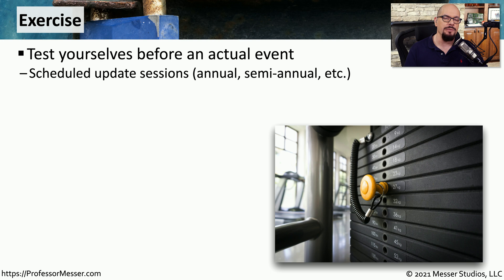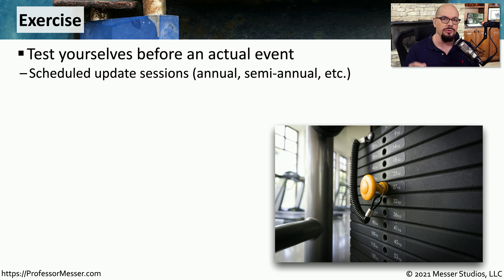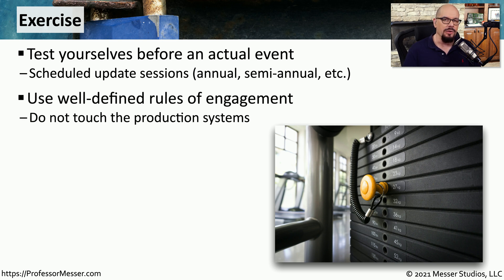The first step is going to be performing exercises — testing yourself and everyone in your organization on what they would do if an incident occurs. These can be scheduled once a year, twice a year, or even more, so that everybody becomes accustomed to what they would do during an incident. We want to be very careful that when we're performing these exercises, we're not affecting anything related to our production networks.